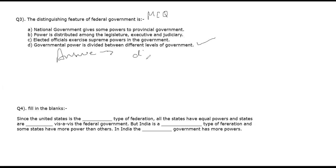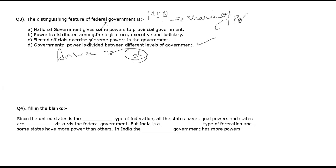The answer is option D. As we have already studied, federalism is about the sharing of power. The fourth option states that government power is divided — meaning shared — at the different levels of the government. So the fourth option is correct.